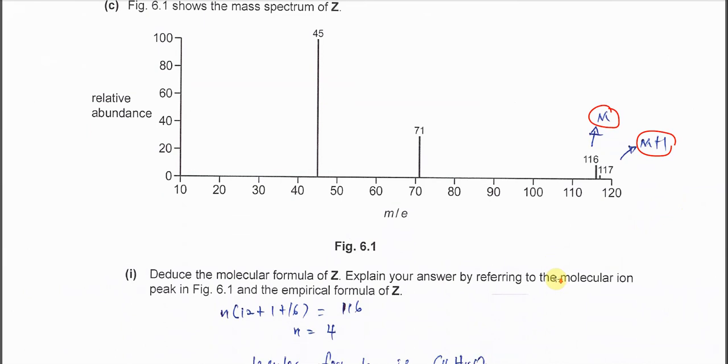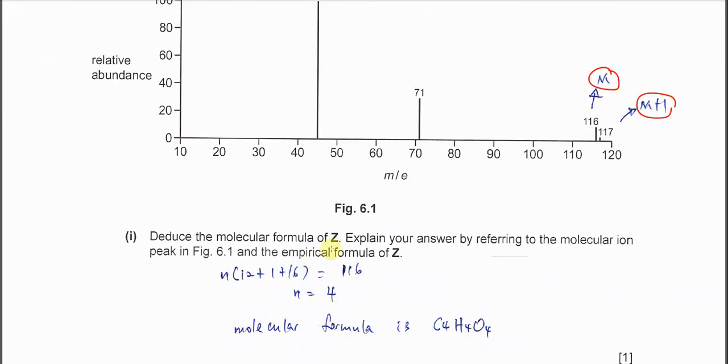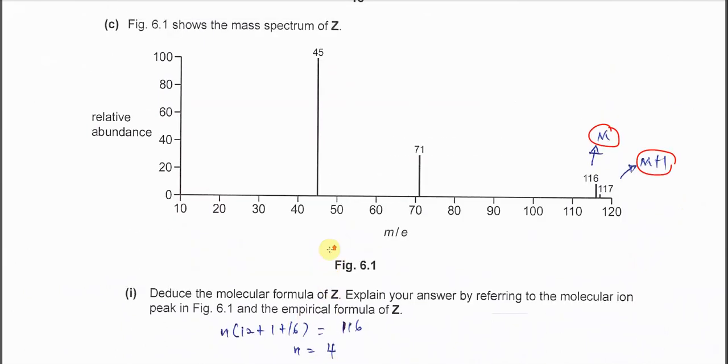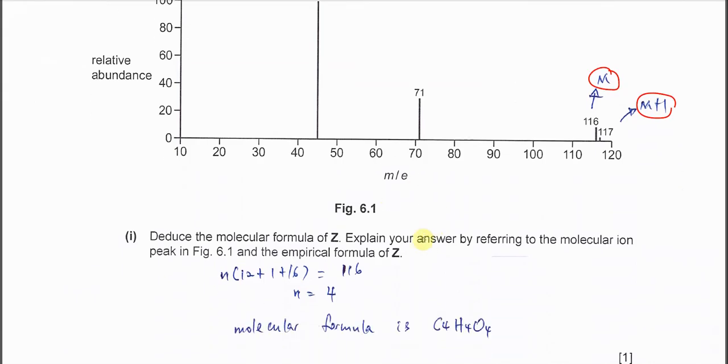Deduce the molecular formula of Z using this mass spectrum. In this mass spectrum what you need to get is the mass of the molecular ion which is 116. From here we know the molar mass is 116.